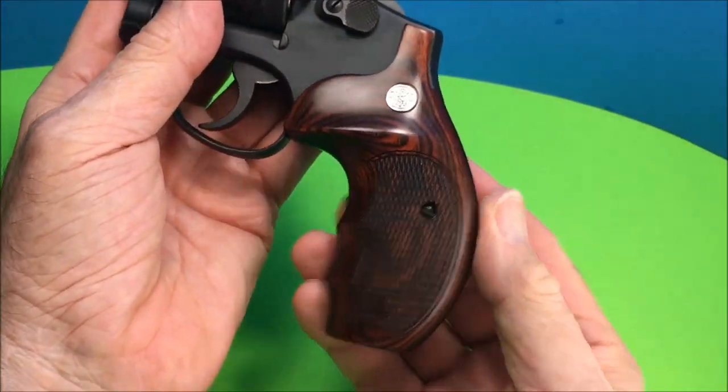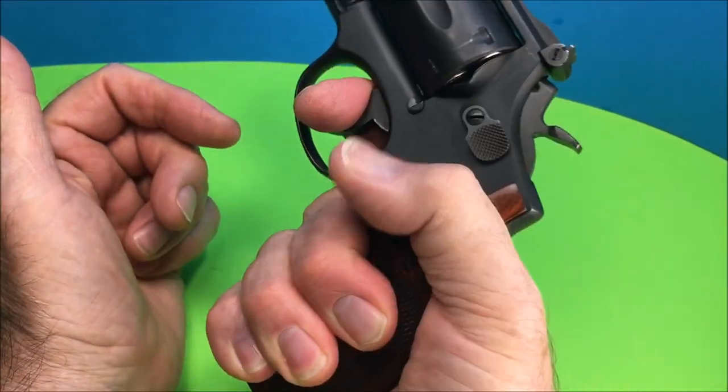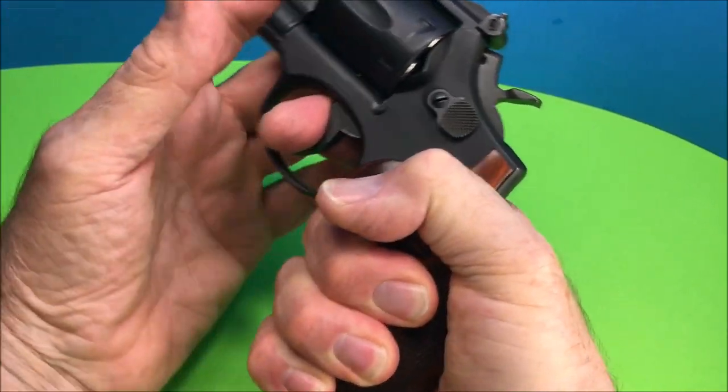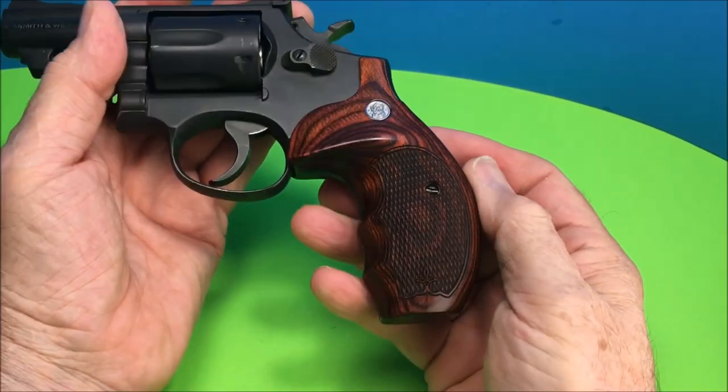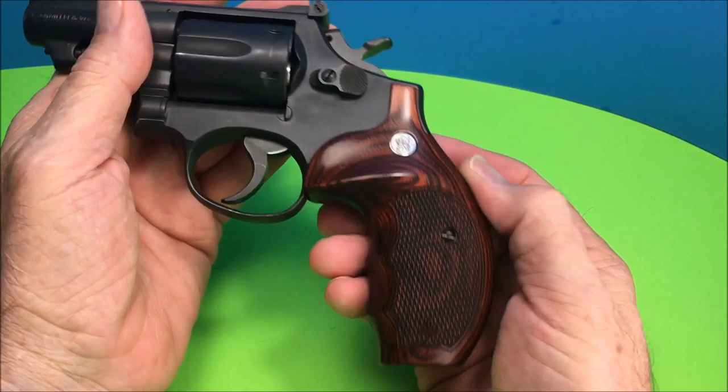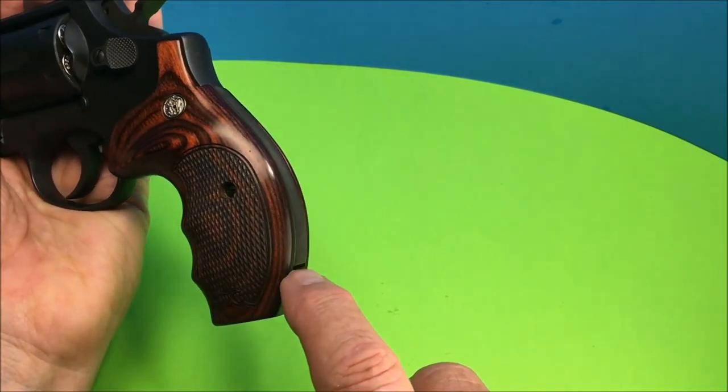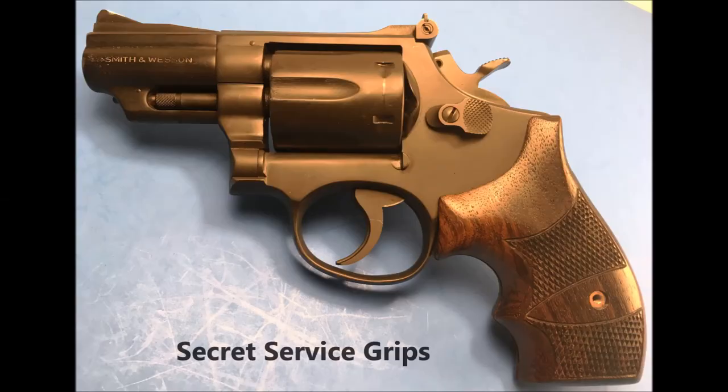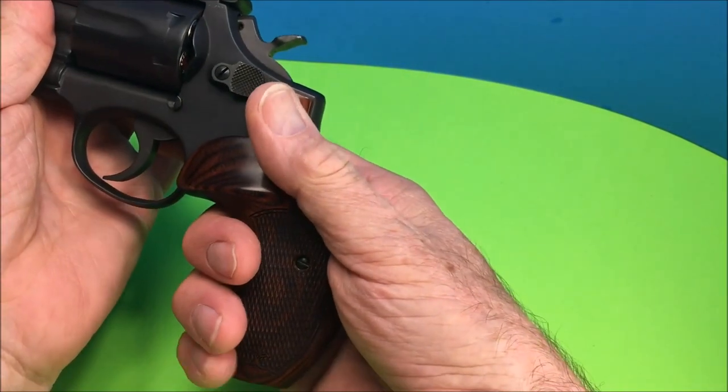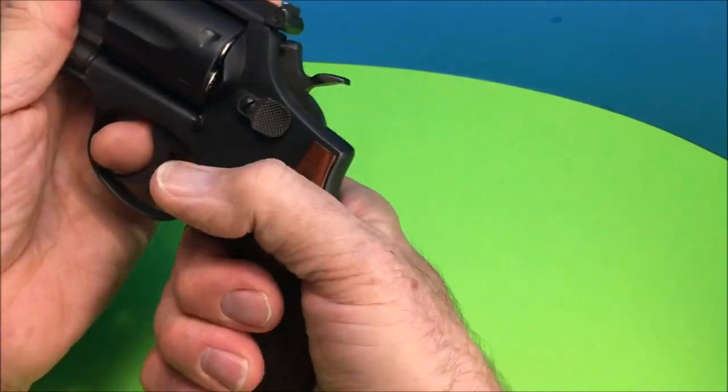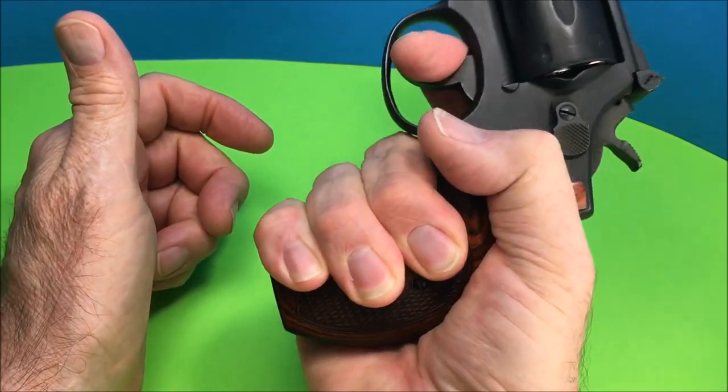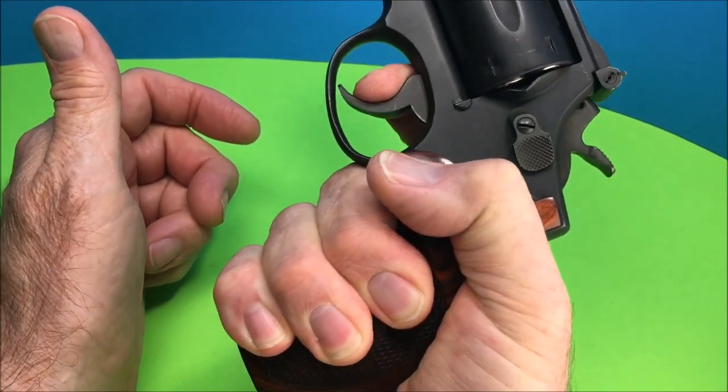And these grips really feel really good, very comfortable. The Secret Service Model 13 has the boot grips that cut off right here. So your pinky is left hanging, with these grips you get all your fingers on there, very comfortable.